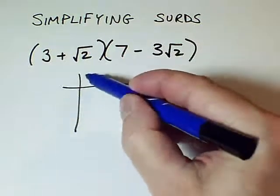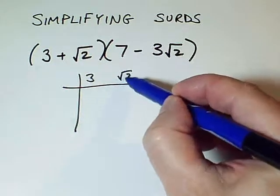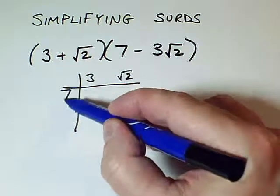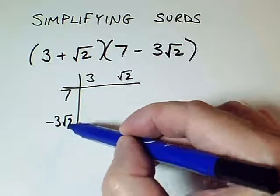So I'm going to use a grid. I'm going to have 3 and root 2 from the first bracket, and 7 and minus 3 root 2 from the second bracket.